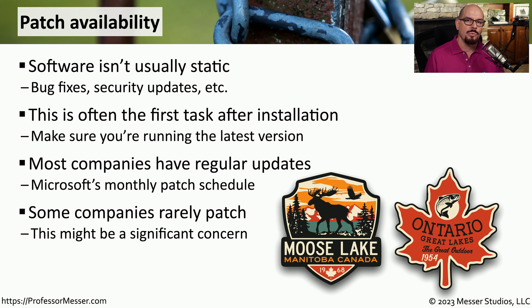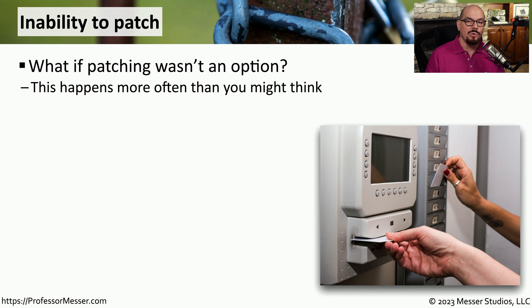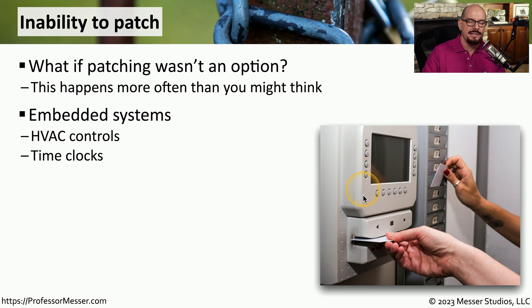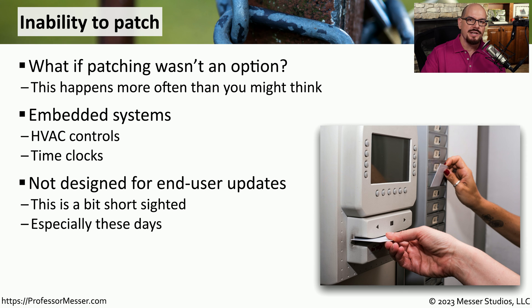From a security perspective, we want to be sure to limit any instances of a security risk. In some cases, you might find that an organization doesn't release patches and there's no process in place to patch a particular system. We see this often with embedded systems like HVAC controls for heating, ventilation, and air conditioning, or time clocks. These are purpose-built systems with no internet access or other connectivity, so there's no easy way to patch what's inside. This is relatively short-sighted because attackers will find any technology and find a way to exploit it. There may be security issues with the software running on these systems, but until you find a patch, it will remain vulnerable.